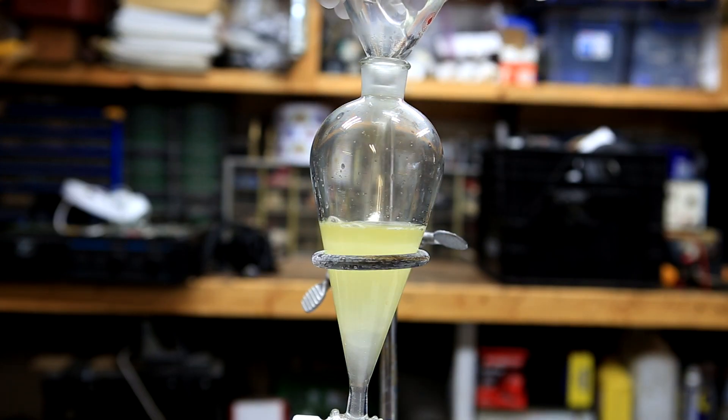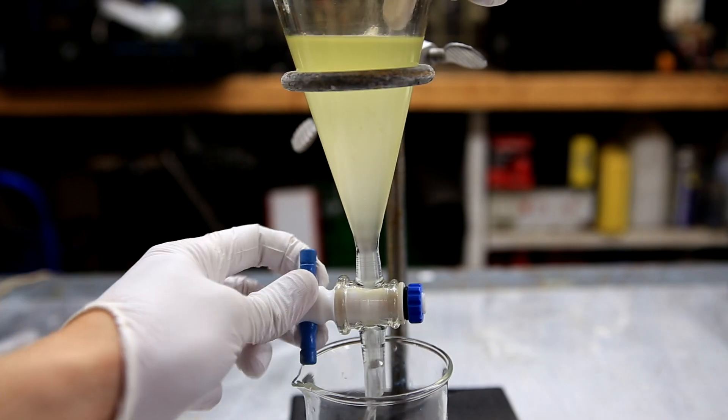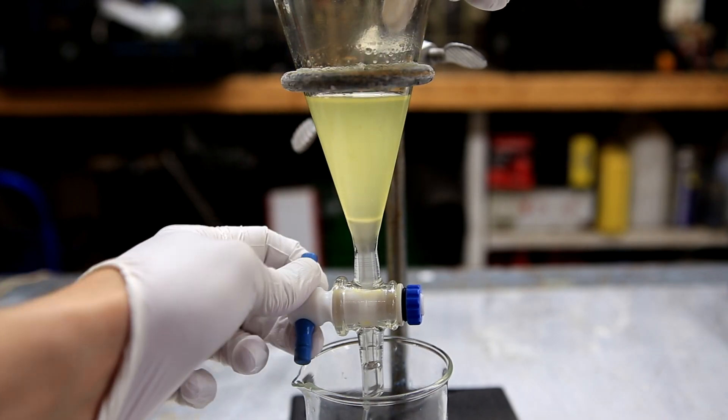The contents of the round bottom flask was then poured into a separatory funnel. The lower layer which contains the acids is drained away and discarded.